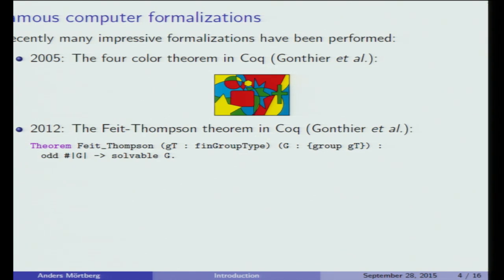COQ checks that this is correct: for any finite group, if the order is odd, then it's solvable. When this proof came out in the 60s it was quite controversial because it was very long — about 250 pages occupying a full issue of a journal. But now they have checked the whole proof in COQ. This proof also builds on lots of mathematics beyond group theory — you need Galois theory and representation theory — so they had to develop a lot of mathematics in COQ.